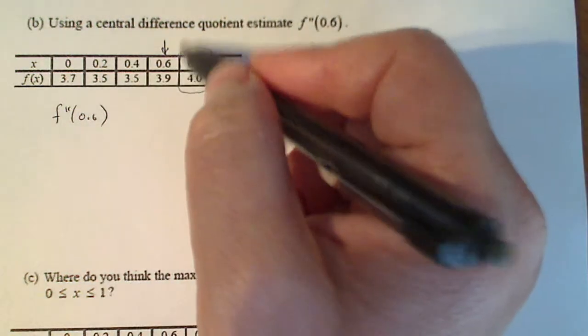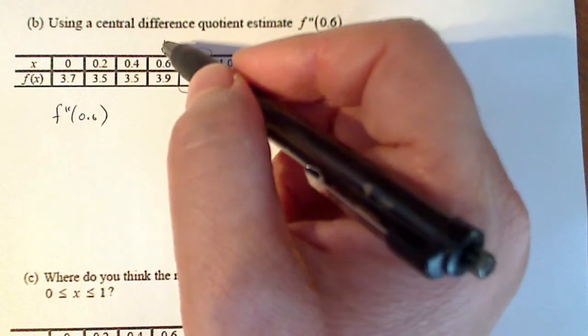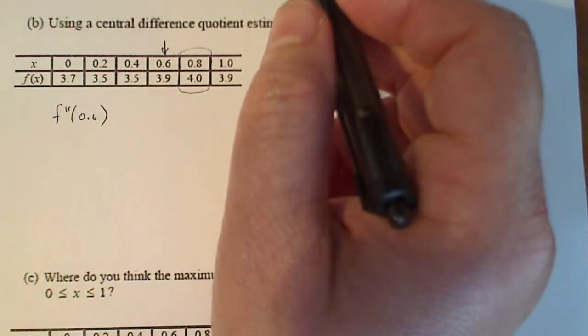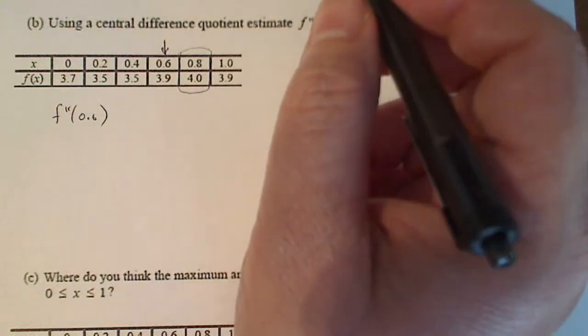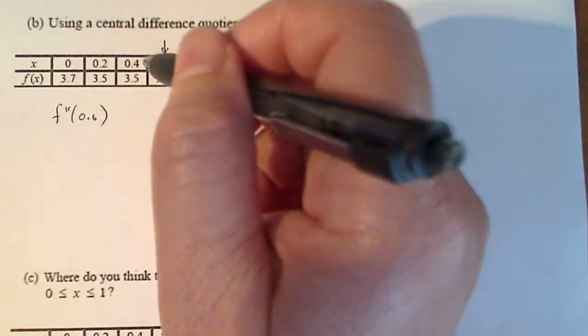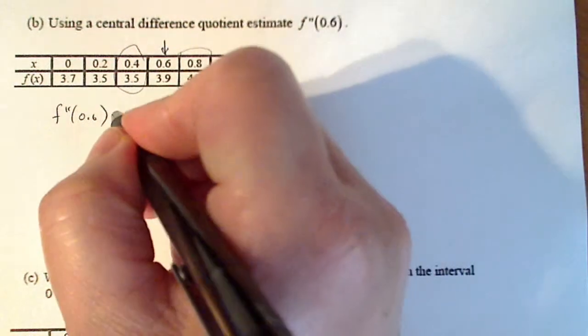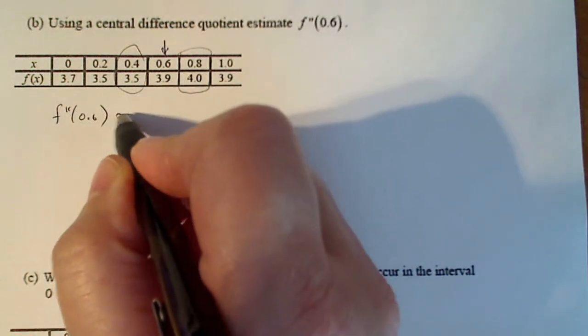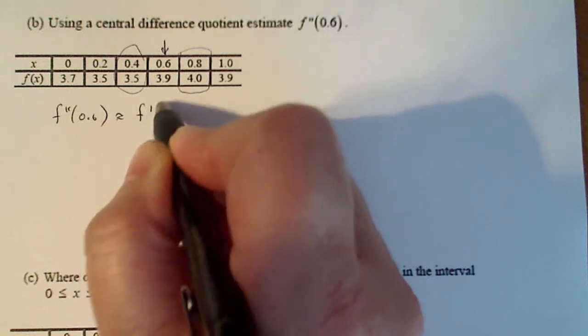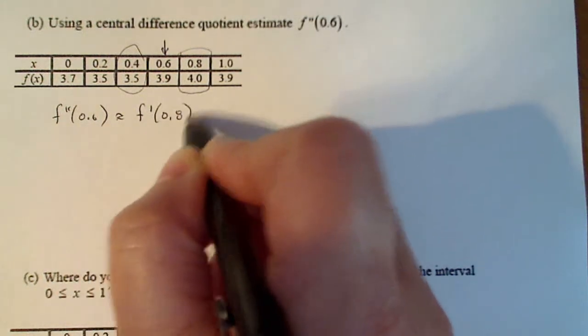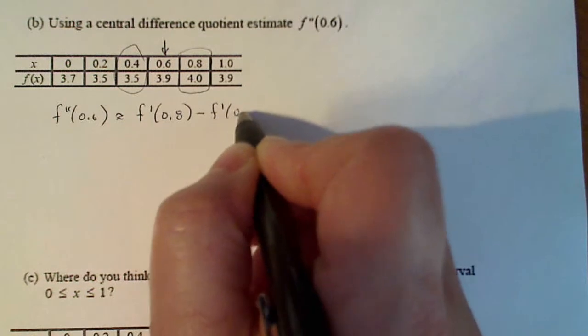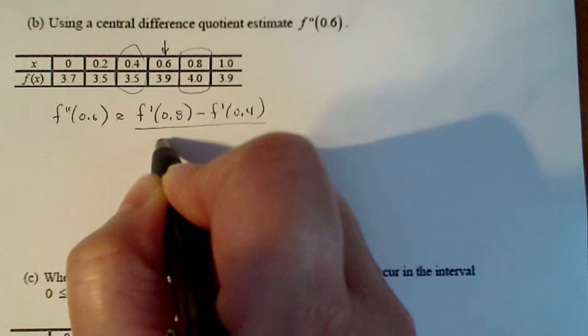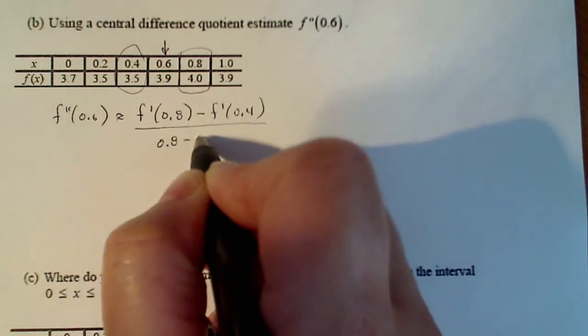I mean, technically I could do 0.7 and 0.5 because I can estimate the derivatives up here. Well, I think I'm just going to use what's here on the table. So I'm going to say that f double prime of 0.6 can be approximated by saying f prime of 0.8 minus f prime of 0.4, all divided by 0.8 minus 0.4.